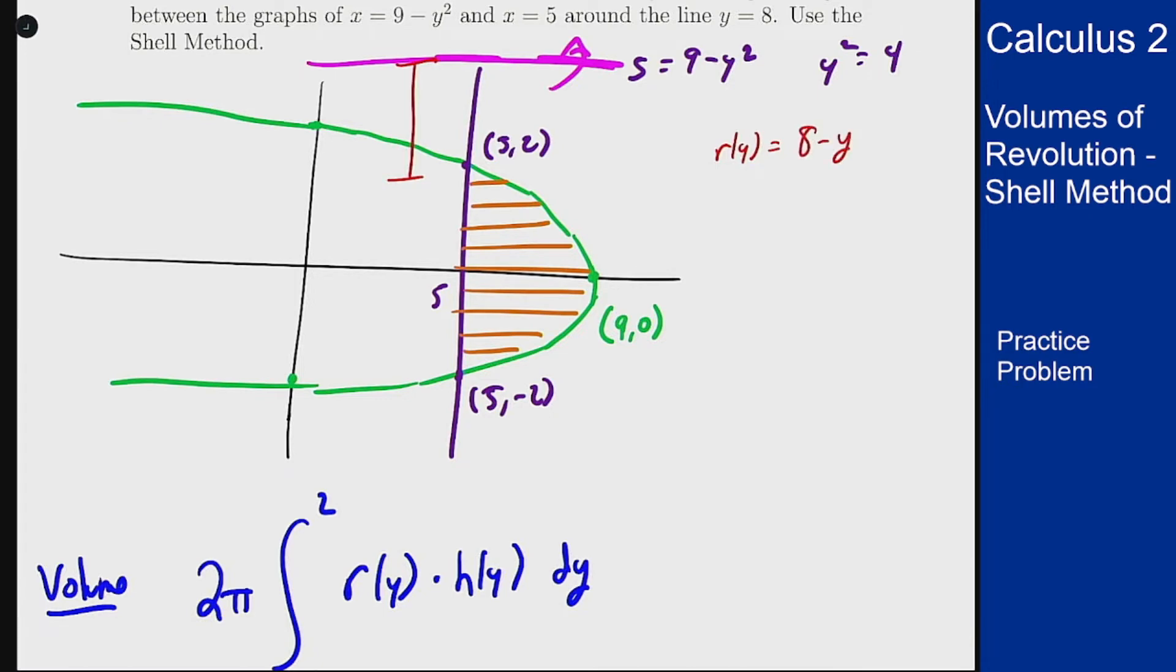If y is at 2 at the top, the radius is only 6. If y goes down to minus 2, the radius goes to 10. There's our radius.